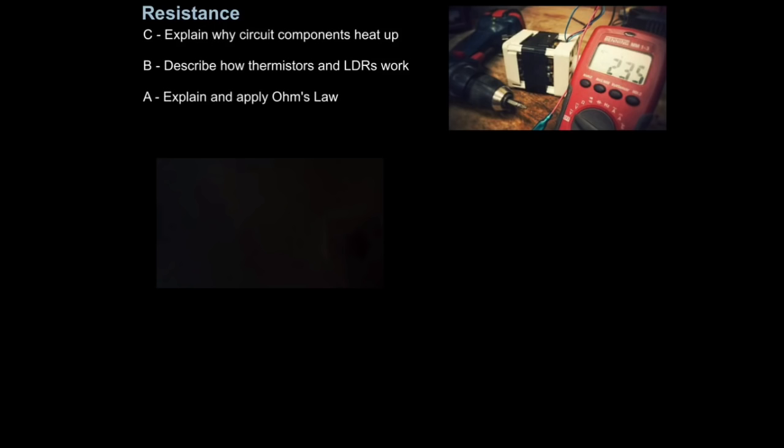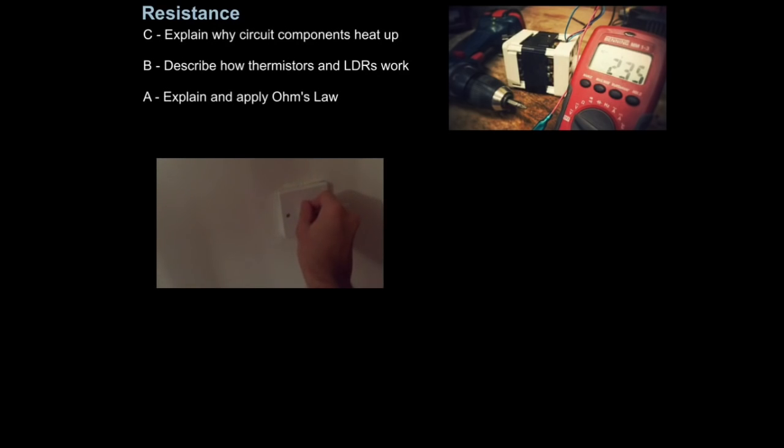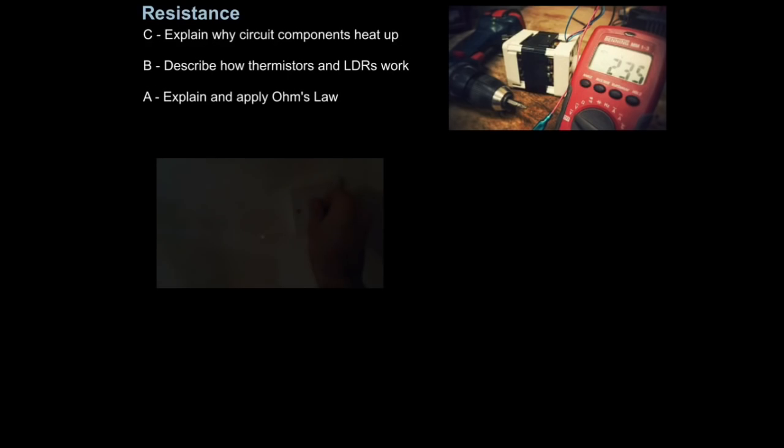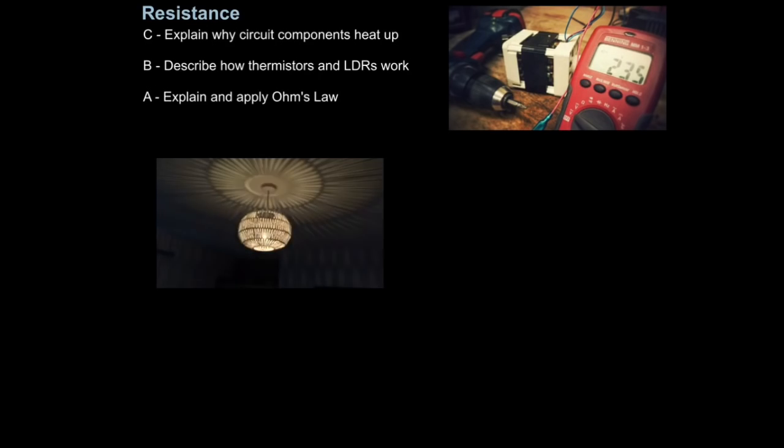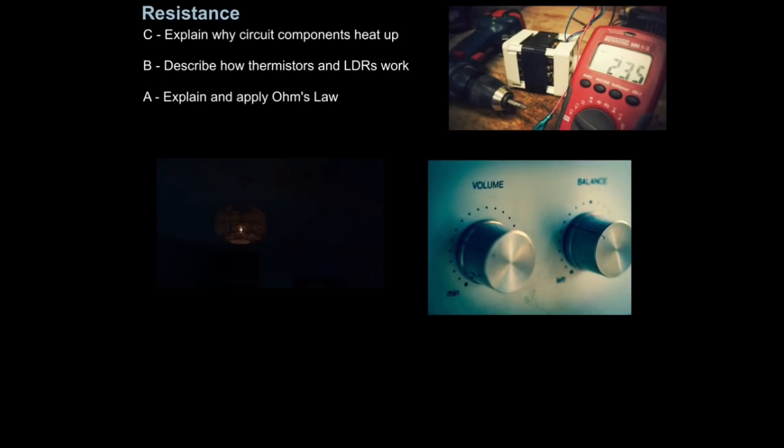For example, these days many lights are fitted with dimmer switches. These are devices that increase and decrease the resistance to change the flow of current. That changes the brightness of a bulb. You may also see resistors like this on stereos and amplifiers, on TVs, anything which has a volume switch because the principle is the same. These switches increase the resistance or lower the resistance to change the volume.